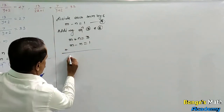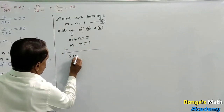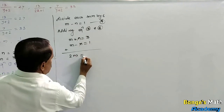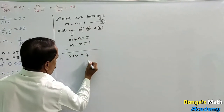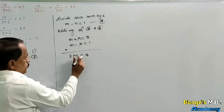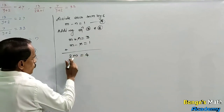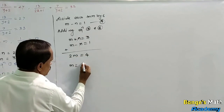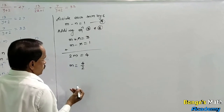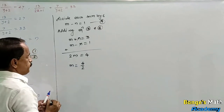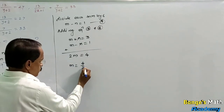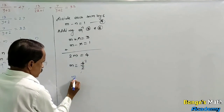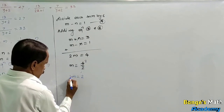Consider equations 3 and 4. Adding equation 3 (m plus n equal to 3) and equation 4 (m minus n equal to 1): m plus m gives 2m, n minus n cancels, equal to 3 plus 1 equals 4. So 2m equals 4, transfer 2 to RHS, m equals 4 upon 2, which gives m equal to 2.